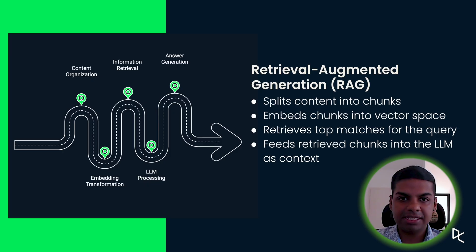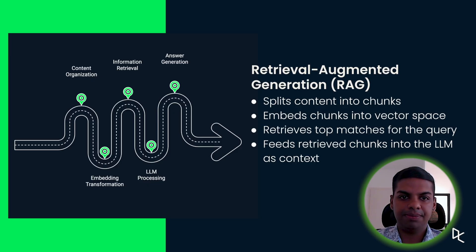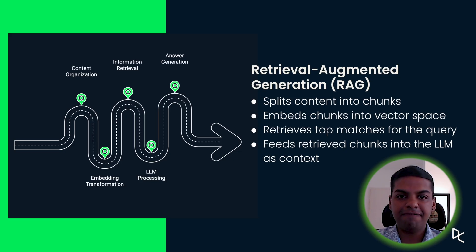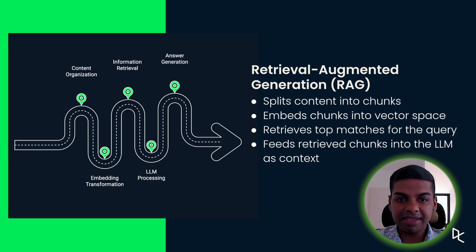RAG combines search and generation. It splits documents into chunks, embeds them, retrieves the top matches and feeds them into the LLM. So instead of guessing, the model works with the facts.